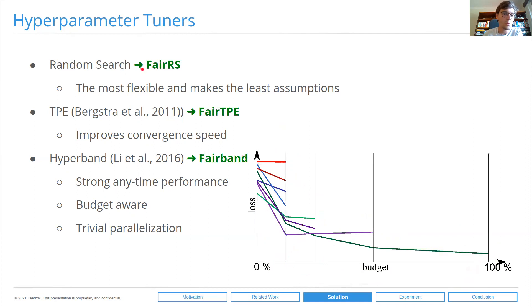So essentially what we're proposing is a fair random search, fair TPE, and fair band. Fairness-aware variants of these popular tuners.